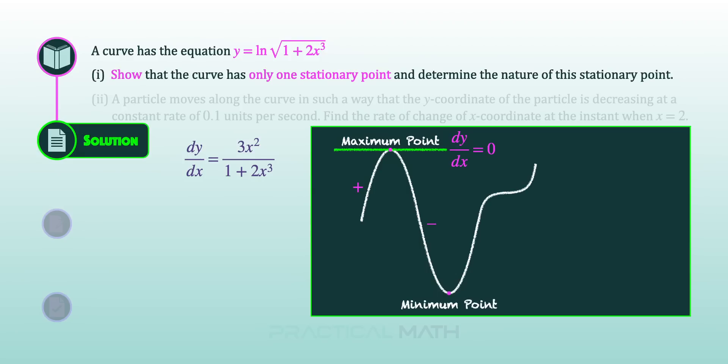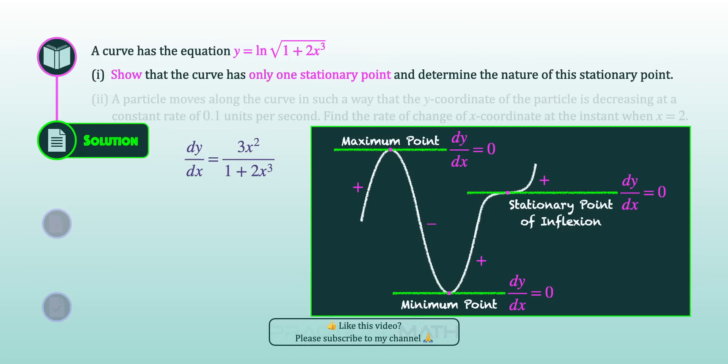For the minimum point, the tangent is similarly parallel to the x-axis with dy/dx equal to 0, and dy/dx changes from negative to positive as x increases through the stationary point. Lastly, for the stationary point of inflection, the tangent is also parallel to the x-axis with dy/dx equal to 0, but dy/dx remains positive or negative as x increases through the stationary point. This covers the first derivative test, which we will use to determine the nature of the stationary point. For all stationary points, dy/dx is always equal to 0.